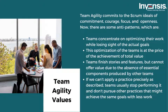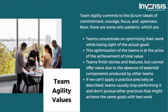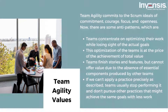Talking about team agility values, team agility commits to the Scrum ideals of commitment, courage, focus, and openness. Anti-patterns of not adopting this strategy include: teams concentrating on optimizing their work while losing sight of actual goals; optimization at the price of total value achievement; teams finishing stories but unable to offer value due to missing components from other teams; and teams choosing Scrum or Kanban without determining which is more relevant, rather than taking what works from both.